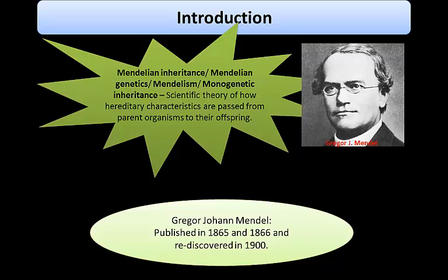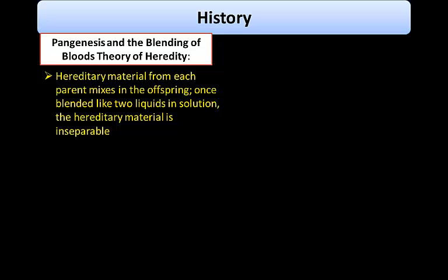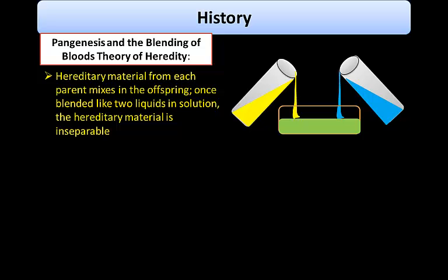Before Mendel, many theories were proposed regarding heredity. One of them was pangenesis and the blending of blood theory of heredity. It proposed that hereditary material from each individual parent mixes in the offspring. Once blended, like two liquids in a solution, the hereditary material is inseparable — just like when blue and yellow blend to form green, the colors cannot be separated back.